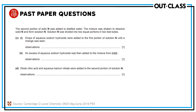The second portion of solid N was added to distilled water. The white solid dissolves to form a colorless solution. Solution N was divided into two equal portions in two test tubes, and then we will test cations and anions.